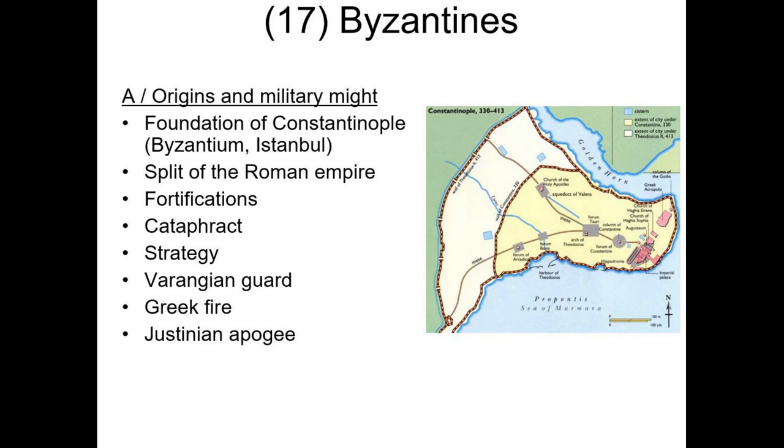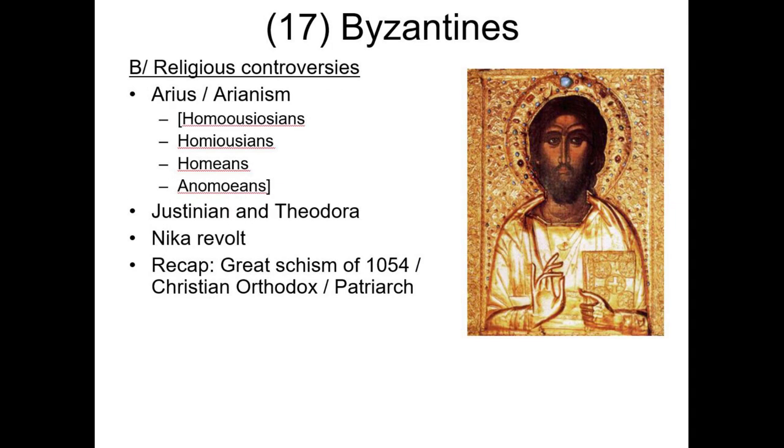Byzantines did more than just fight and survive. They were the heirs to Greek culture, and they spent much time fighting intellectual wars as well. The most important of these debates centered on Christianity, specifically the exact nature of Christ. Was Jesus a god, like his father? Or was he more of a regular human being, like the rest of us? We saw that followers of the prophet Arius believed that Jesus was human, until Arianism was declared a heresy in 325 AD, when Constantine called the Council of Nicaea, which imposed the concept of the Holy Trinity — the Son, the Father, and the Holy Spirit were one and the same. Arianism never completely disappeared in the Byzantine Empire, where Christianity split into a myriad of subgroups defined by their views on the exact nature of Jesus.